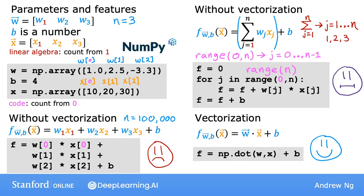And the reason that the vectorized implementation is much faster is behind the scenes the NumPy dot function is able to use parallel hardware in your computer.